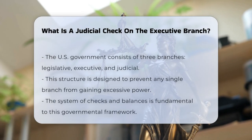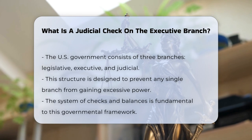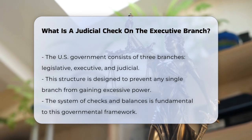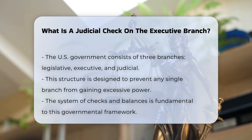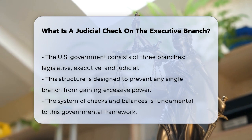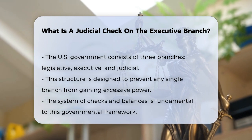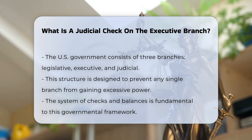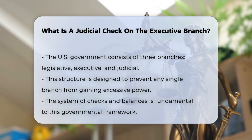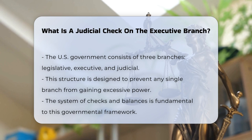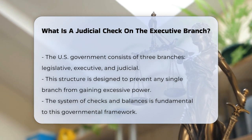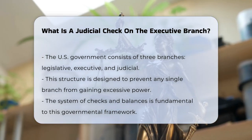The U.S. government is structured into three branches: the legislative, executive, and judicial. This division is designed to ensure no single branch holds too much power, and it is achieved through a system of checks and balances. The judicial branch, specifically the Supreme Court and other federal courts, plays a crucial role in this system.